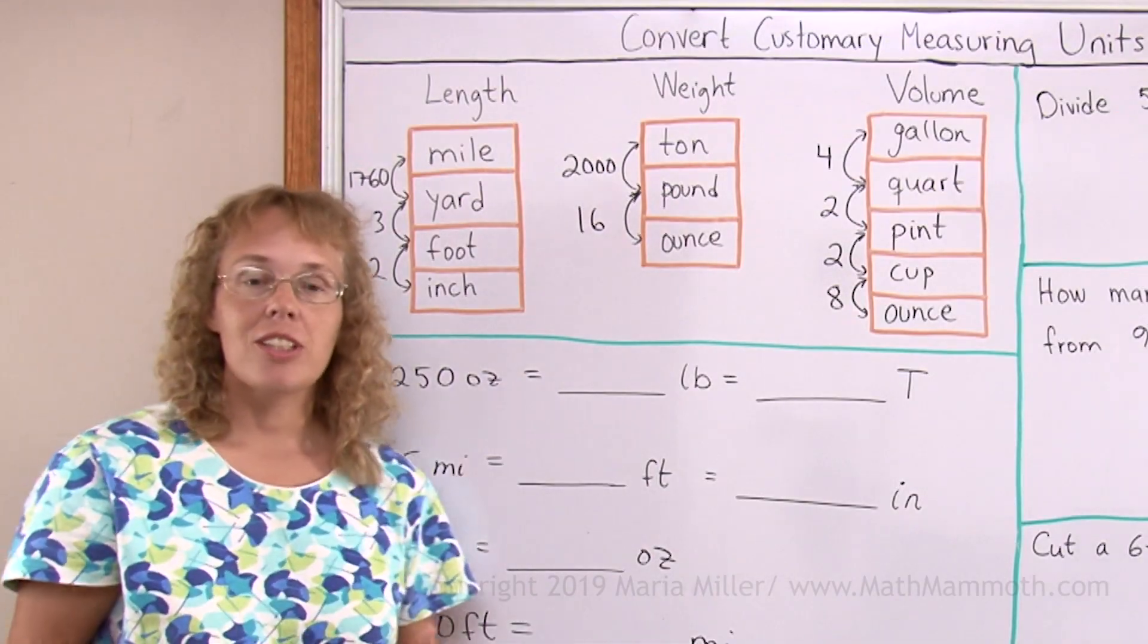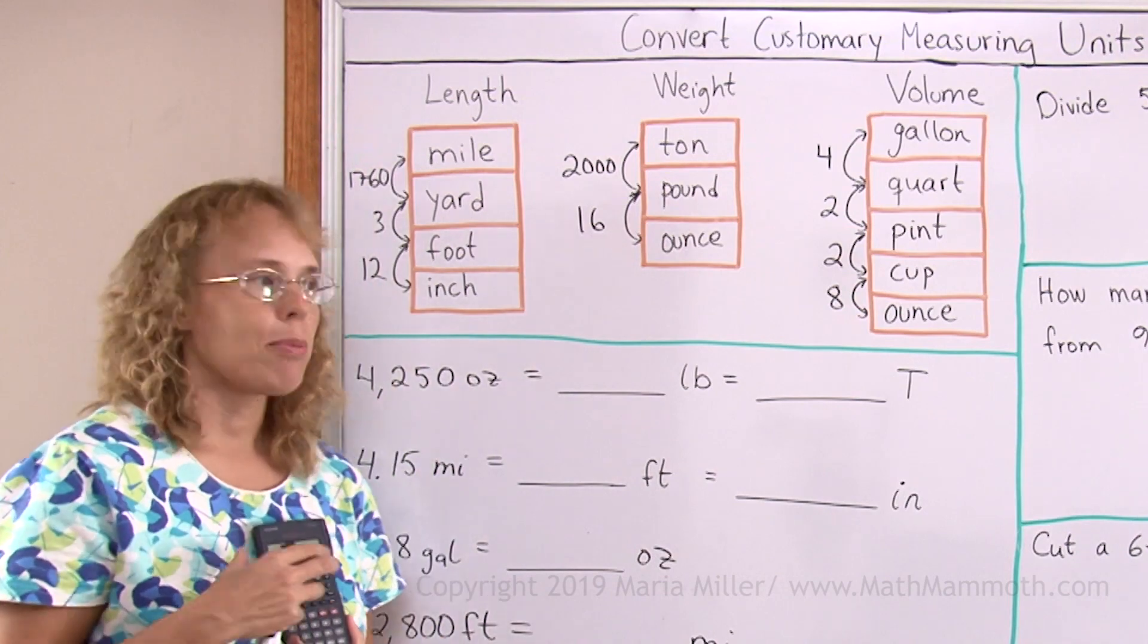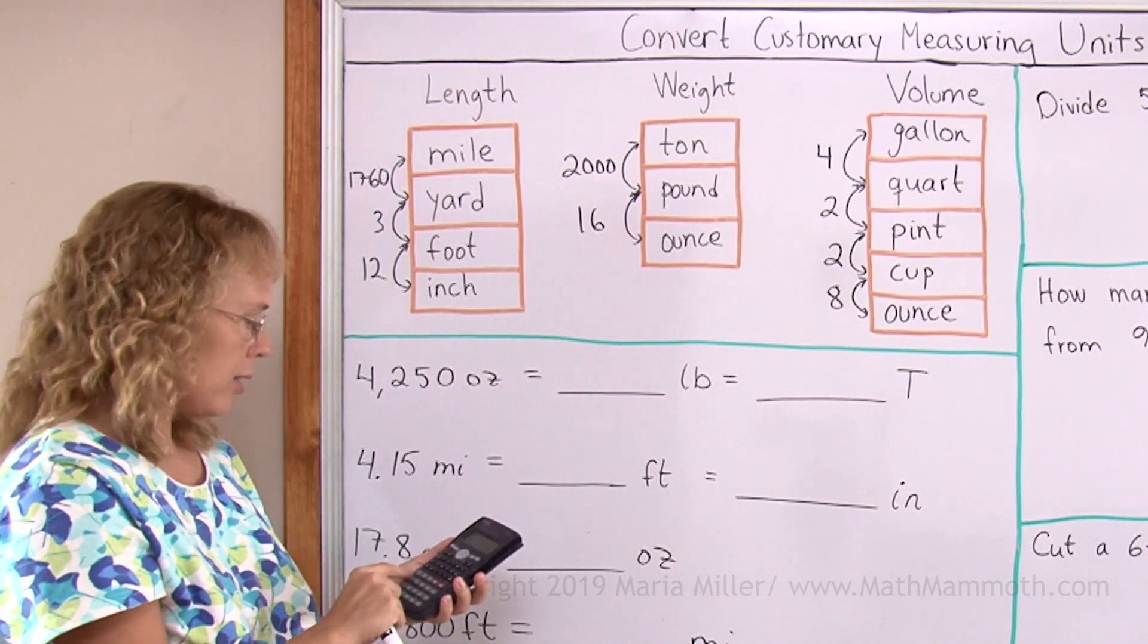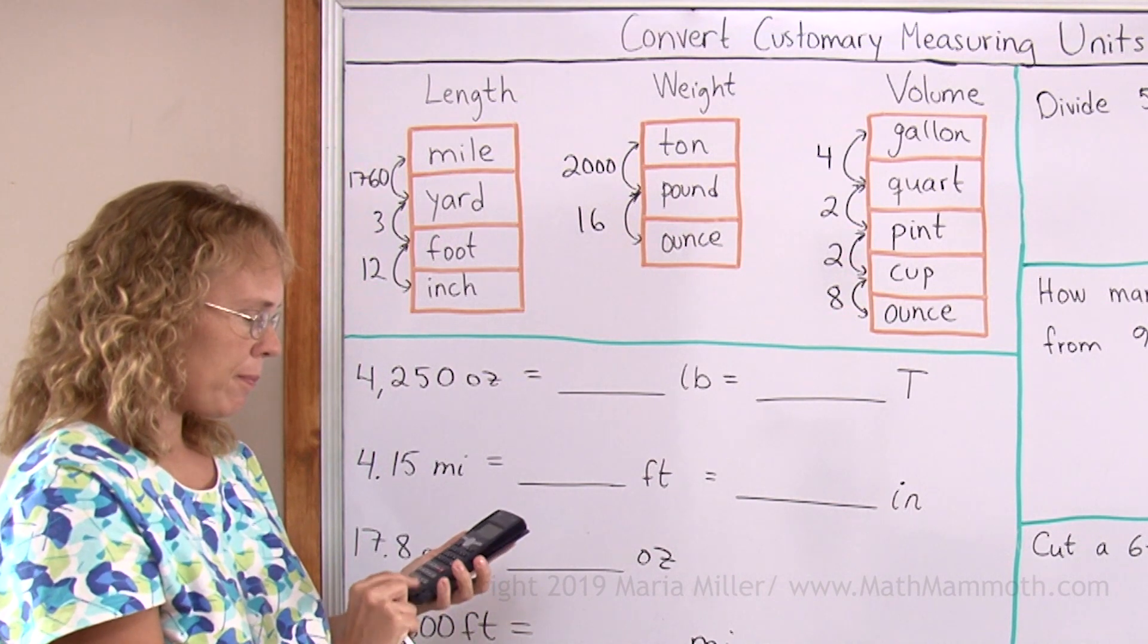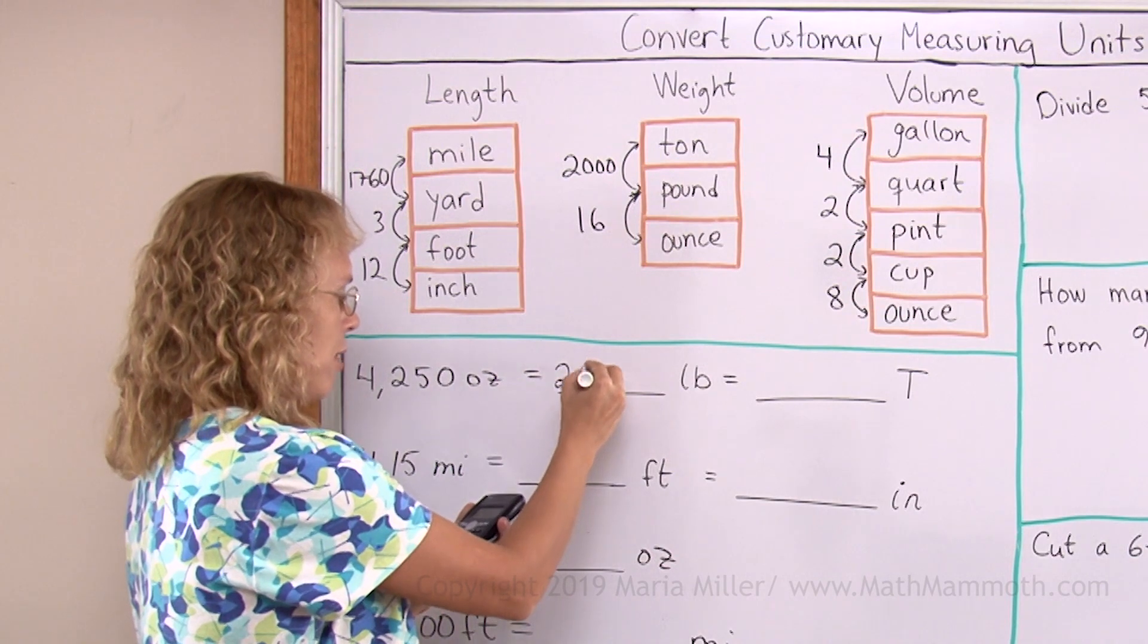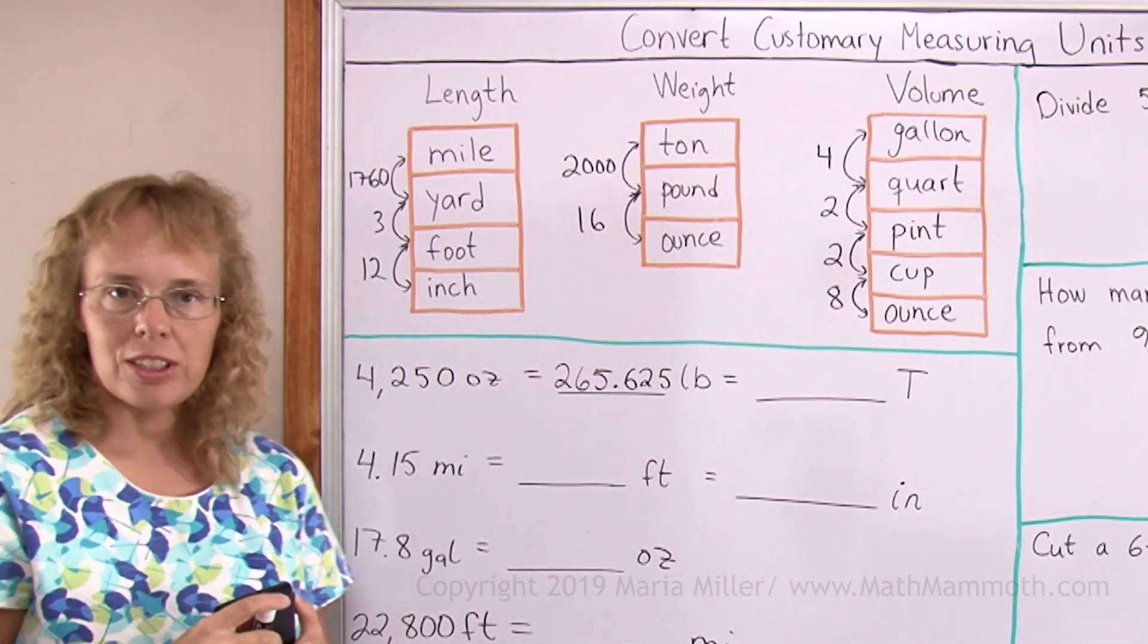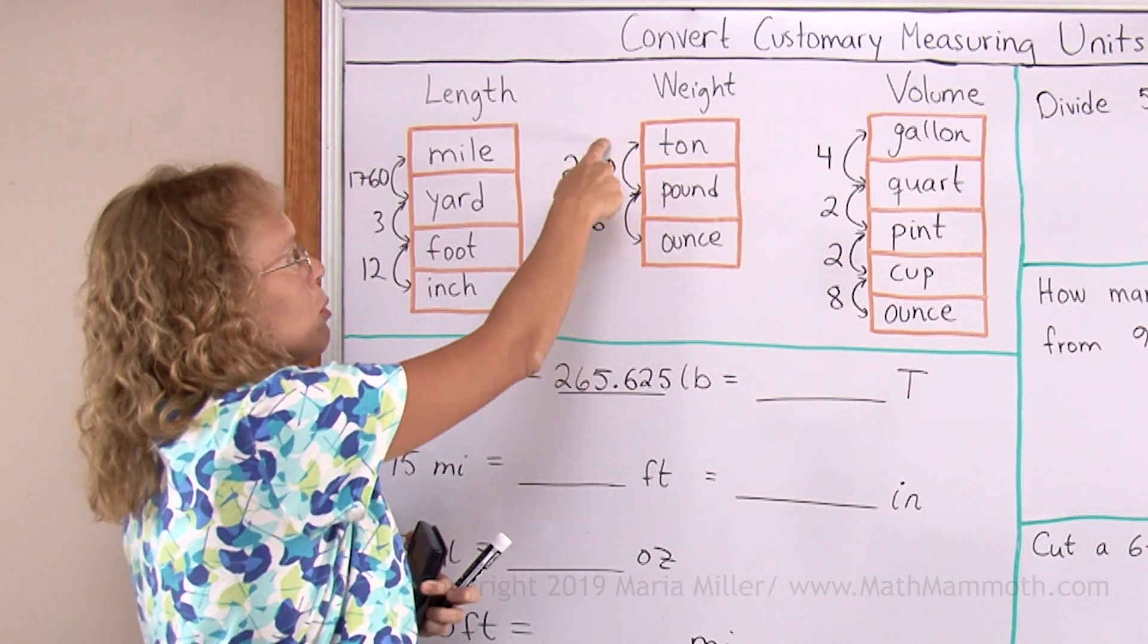Okay, let's get started and we will use a calculator here. I will use a calculator to multiply or divide. And we already decided here we need to divide from ounces to pounds. So I will take this 4250 and divide that by 16.